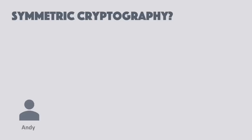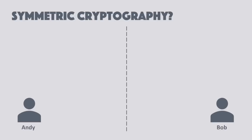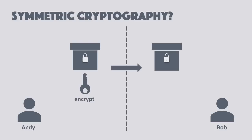First up is symmetric cryptography — this is the easiest to understand. Let's say Andy has a file which he wants to encrypt and then send to his friend Bob. Andy puts his document in a box, puts a lock on top of it, and then locks it using a key. Bear in mind that Andy needs to share his key with Bob beforehand. When Bob gets the box, he can just open the lock and see the file sent. As no one else has Andy's key except for Bob, his files are protected from everyone else.